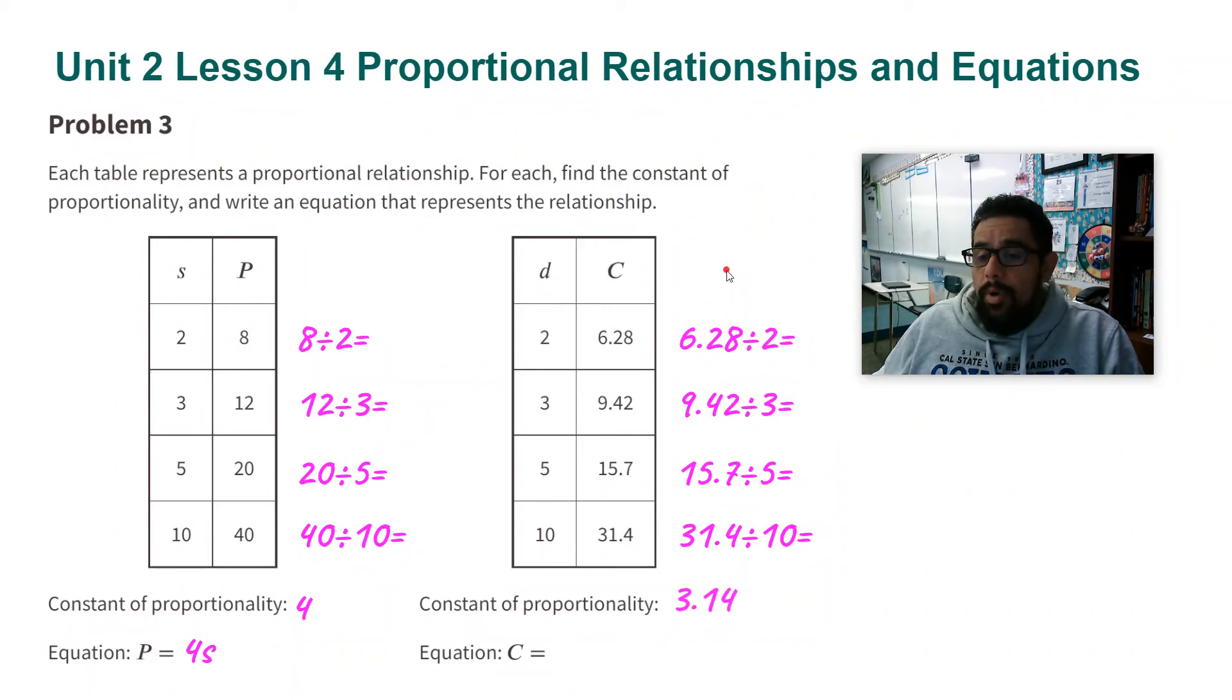Now our equation, again, I take 3.14. I multiply it with these numbers here, d. When I multiply that, it gives me the numbers for C. So that's why I have this as my equation. C is equal to 3.14 times d.